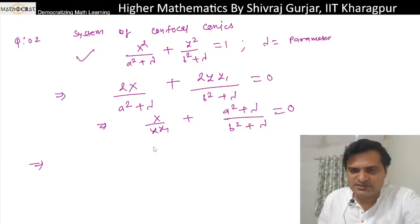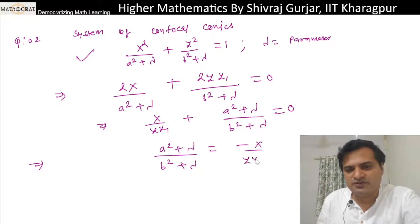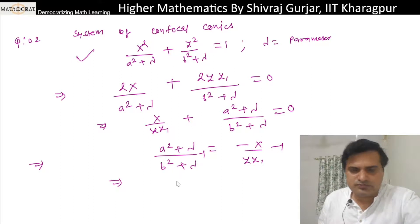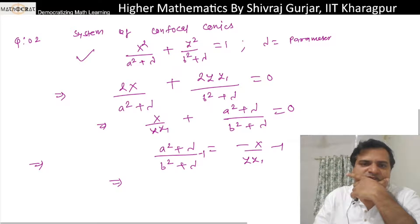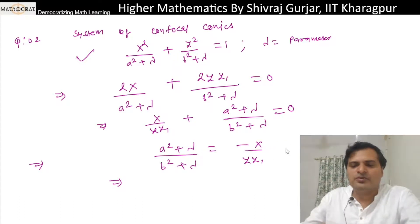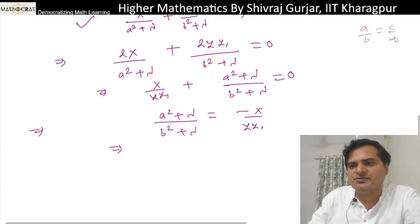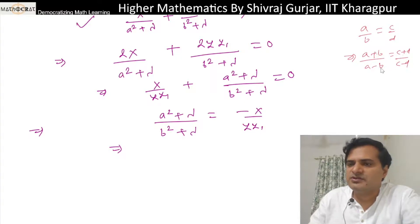Let's find the value of lambda. If we see (a² + lambda)/(b² + lambda) equals minus x/(y·y₁), comparing the terms — minus here, plus and plus — so rearranging we get a² + b² + 2lambda.